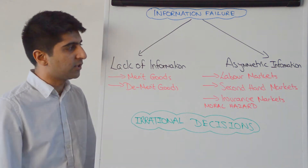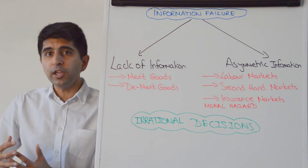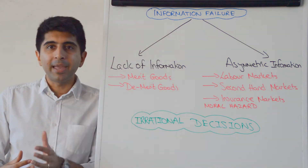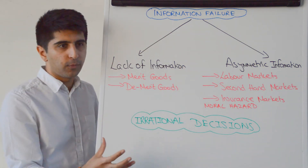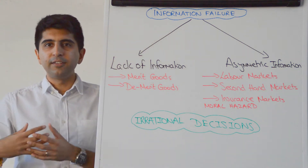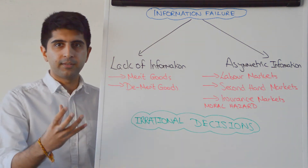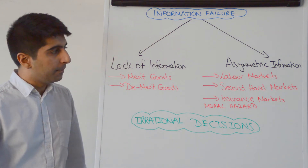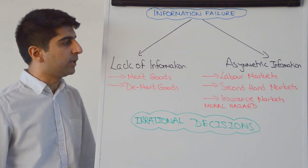There is asymmetric information there. As a result, the employer may make an irrational decision to employ a worker — a decision that's not necessarily maximising their benefit because the information is not being equally shared.